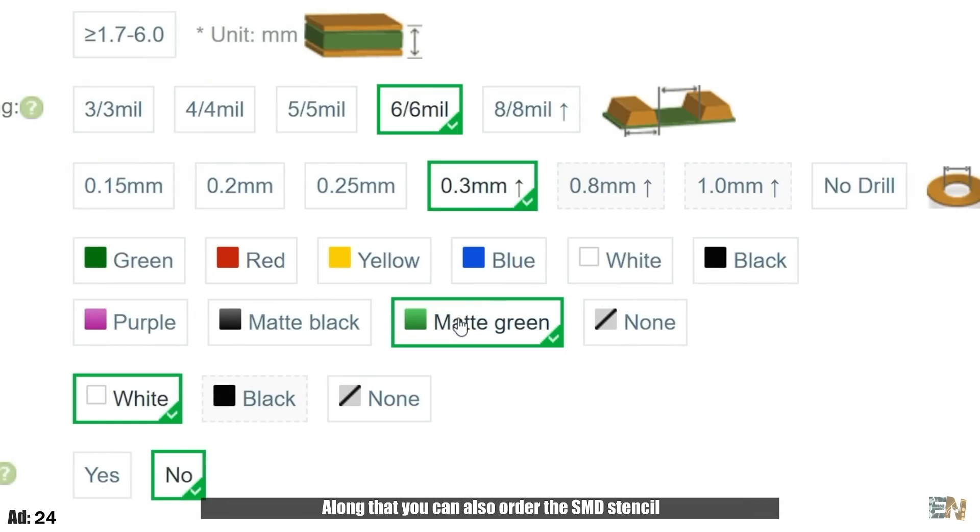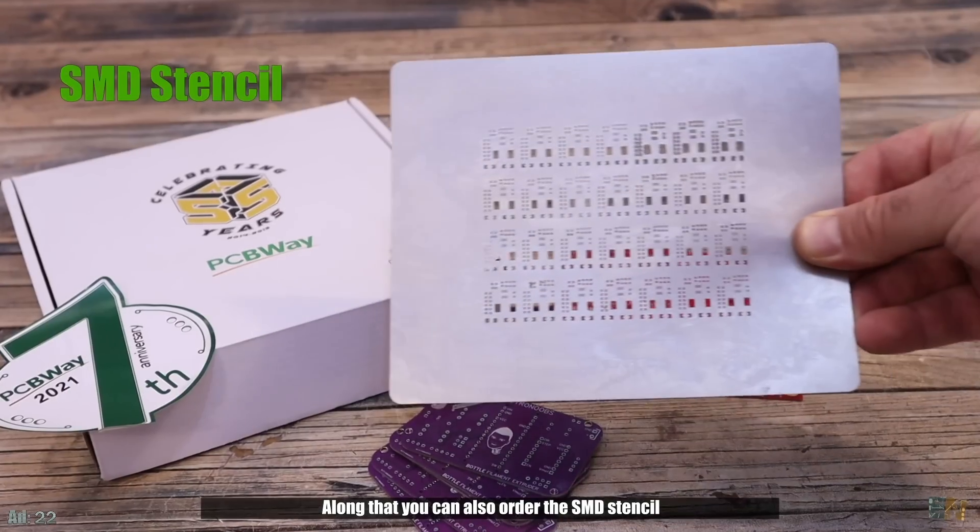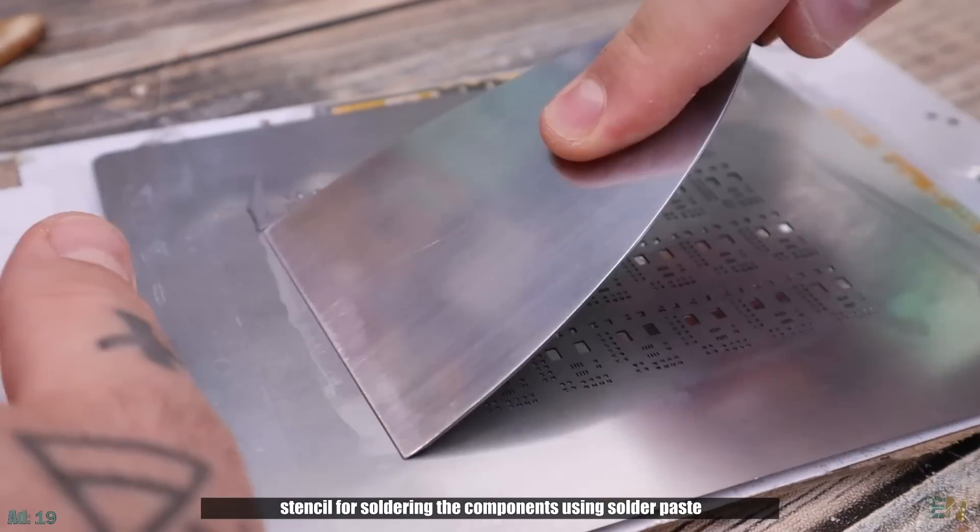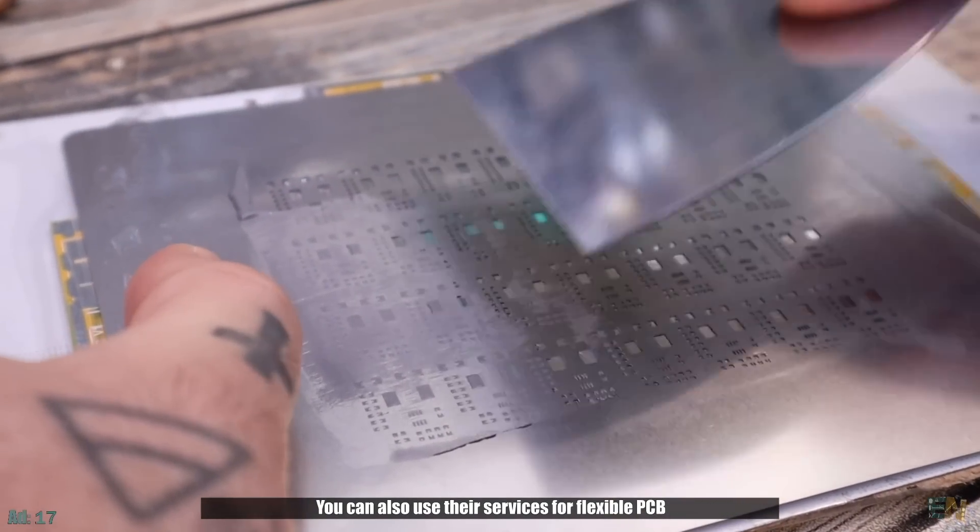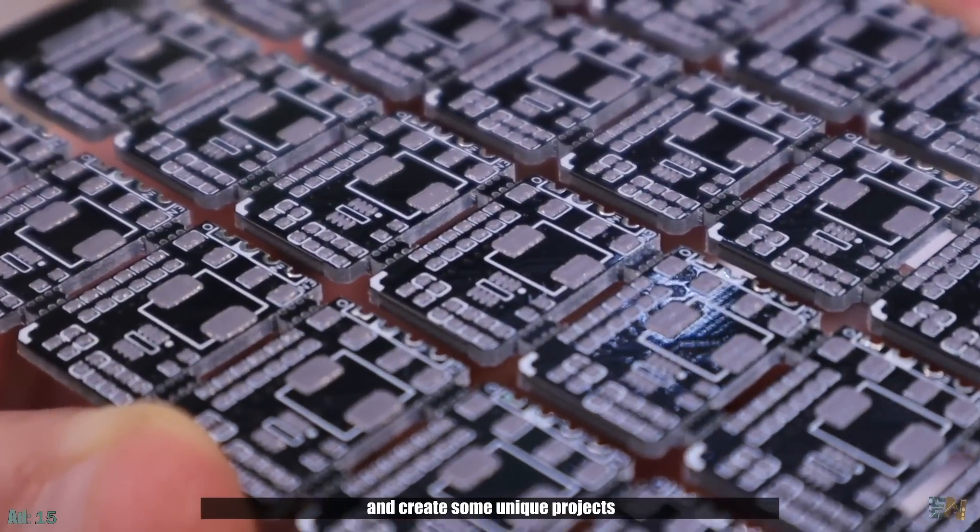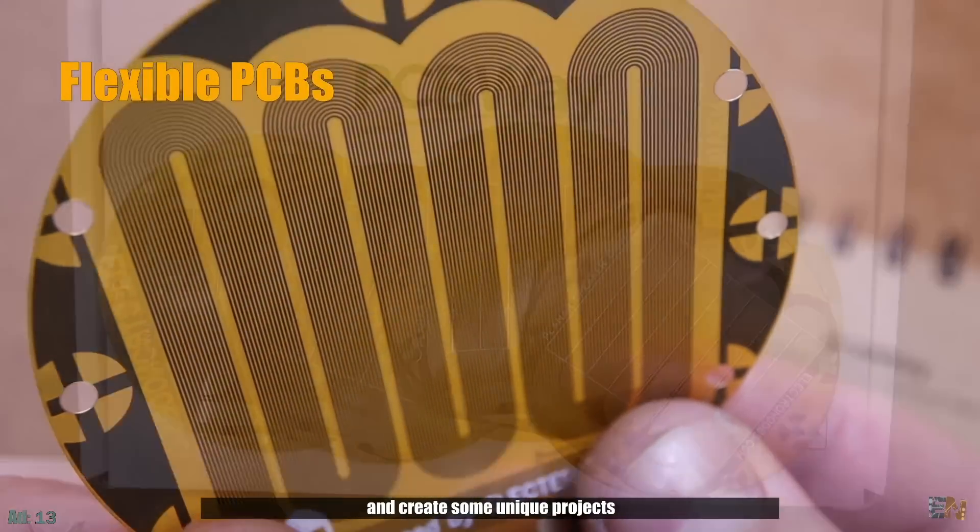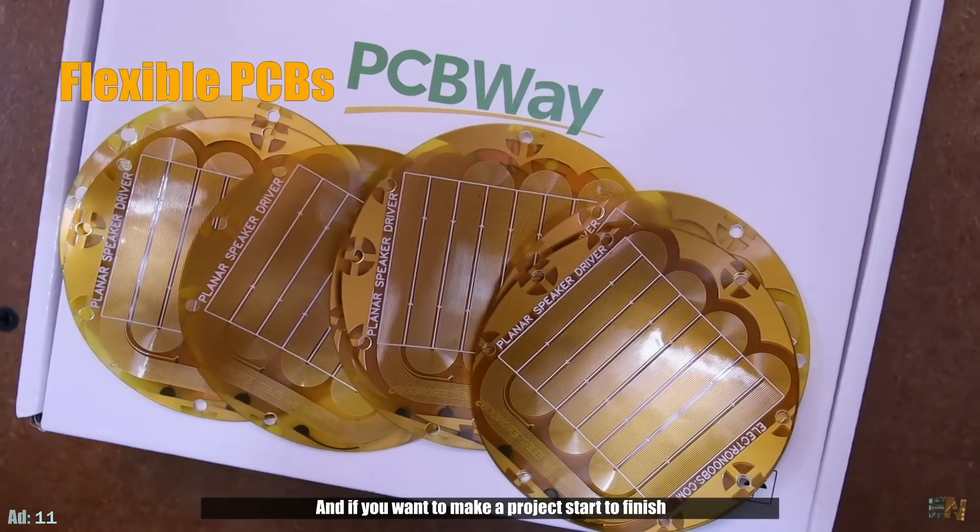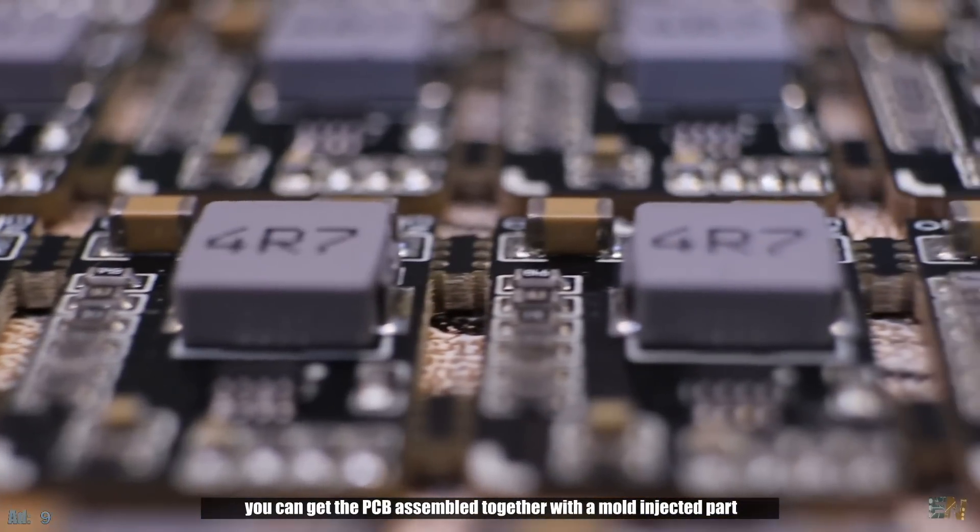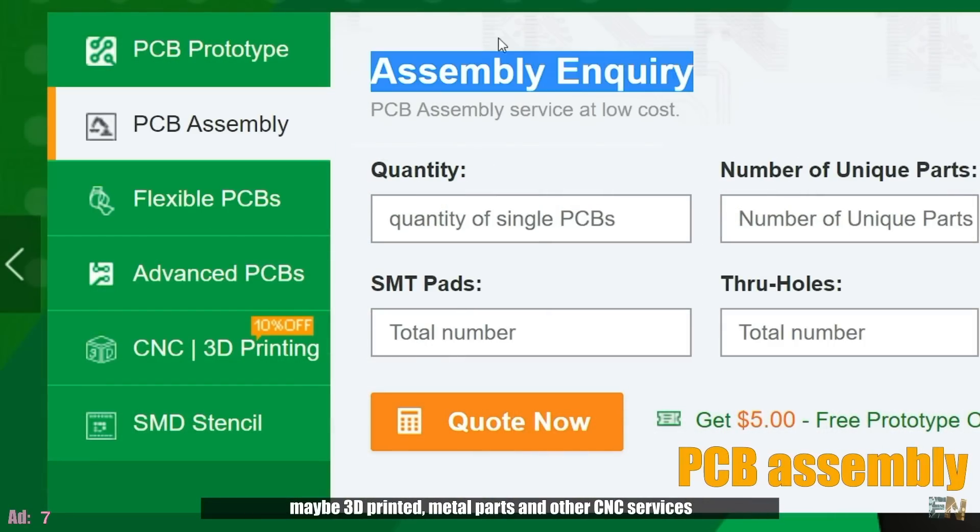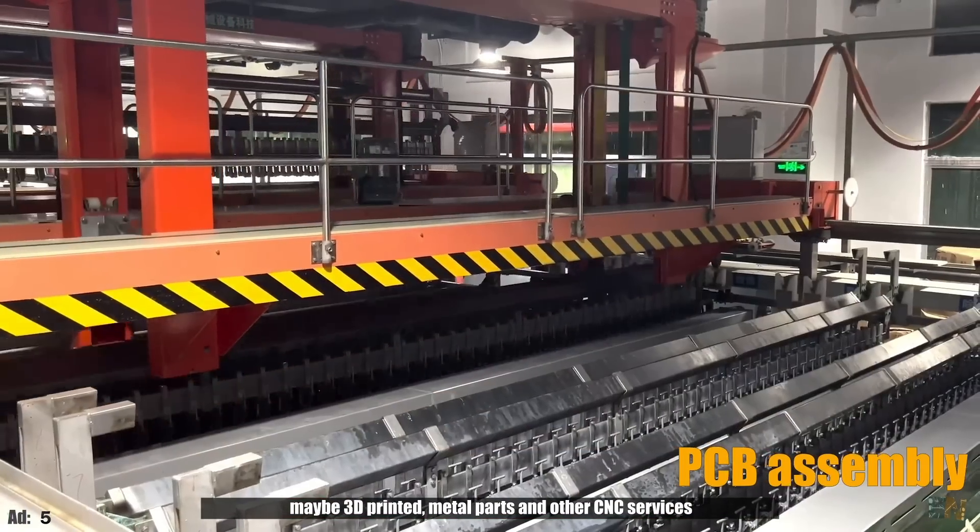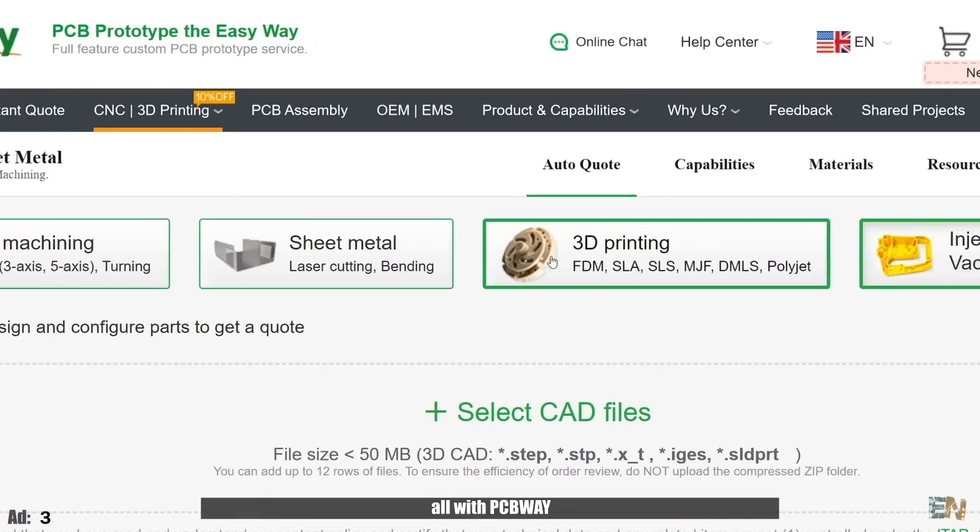Along with that, you can also order the SMD stencil for soldering the components using solder paste. You can also use their services for flexible PCBs and create some unique projects. If you want to make your project start to finish, you can get the PCBs assembled together with the mold injected part or maybe 3D printed, metal parts or other CNC services, all with PCBWay.